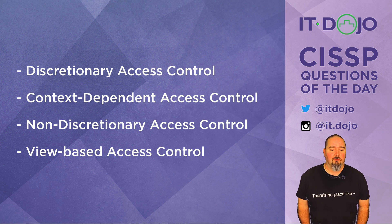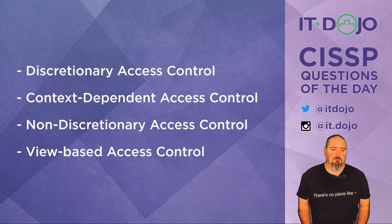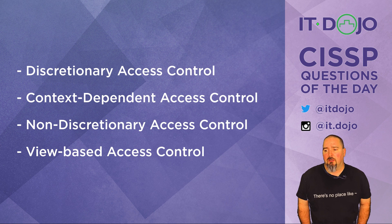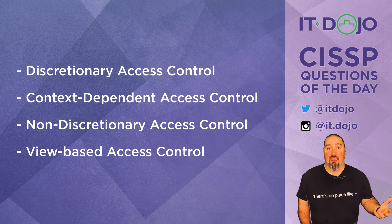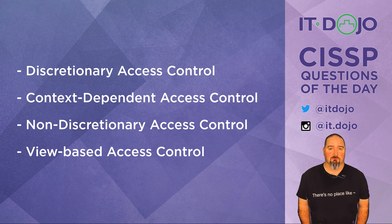The second answer choice is context-based access control — again, not what we're looking for. Context-based access controls are very famously associated with access control lists on firewalls. They might also be used to control access based on disk quotas or the frequency of access — like how many times have you accessed this today or this week. Our scenario in this question doesn't touch that at all.